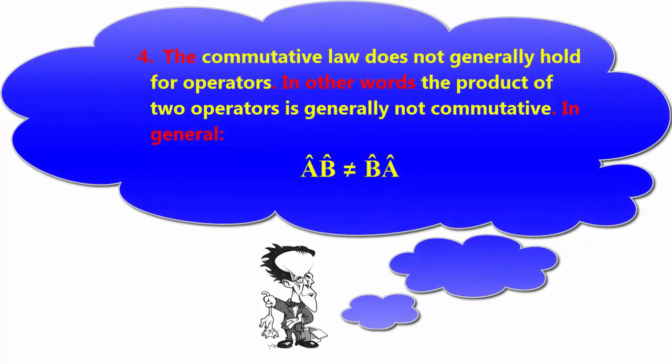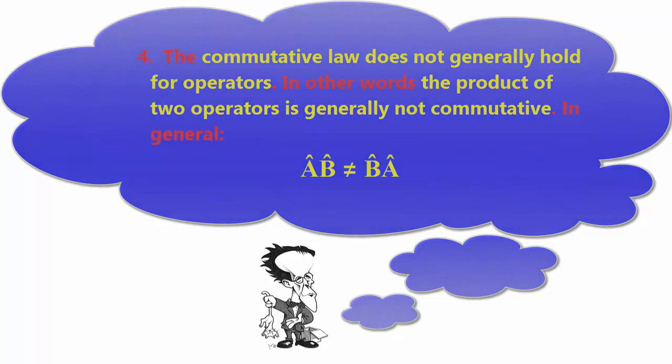4. The commutative law does not generally hold for operators. In other words, the product of two operators is generally not commutative. In general, AB is not equal to BA.